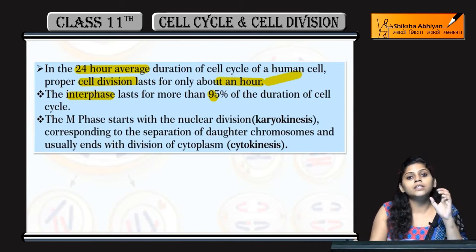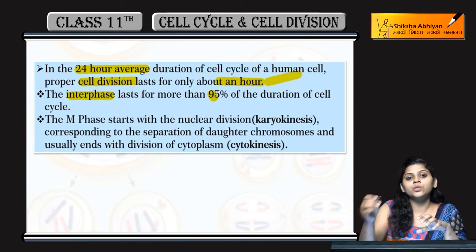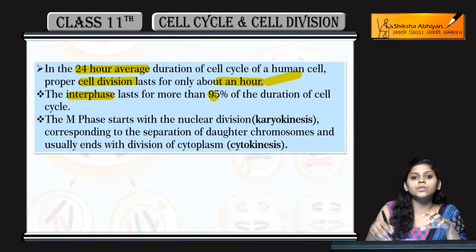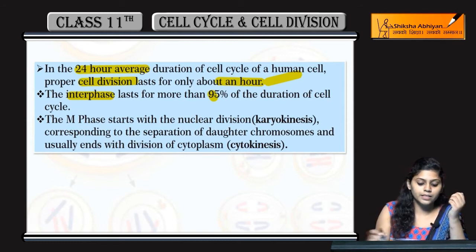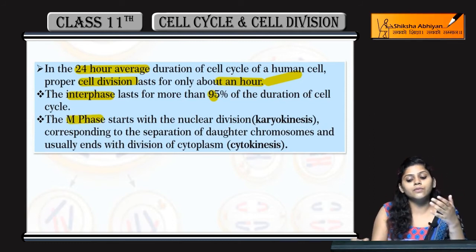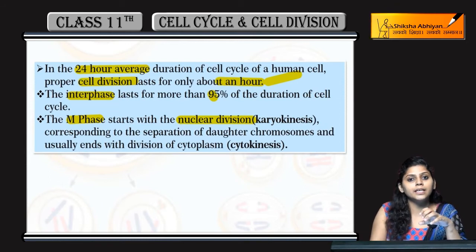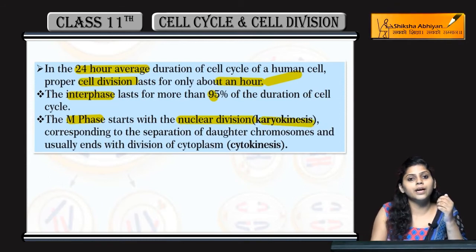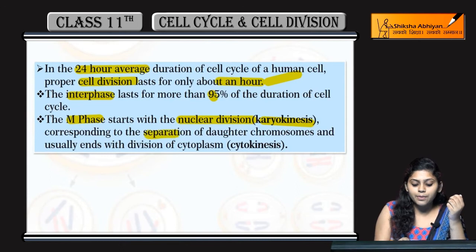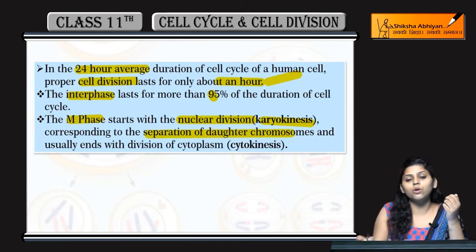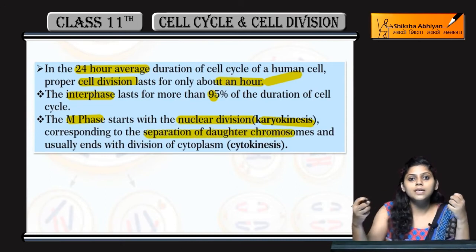If mitosis is happening for just 1 hour, the rest of the time is interphase. M phase starts with nuclear division — the nucleus divides, which is called karyokinesis. Then the daughter chromosomes are separated from each other.